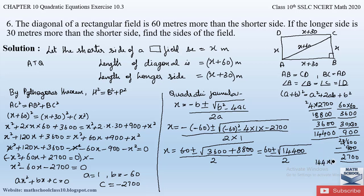So x = (60 ± 120) / 2. For one root we take the plus sign and for the other we take the minus sign.